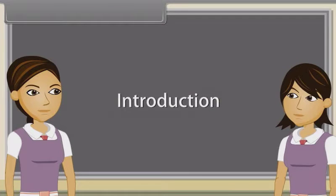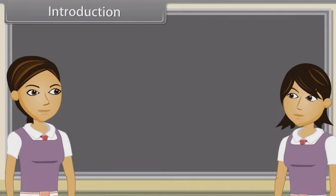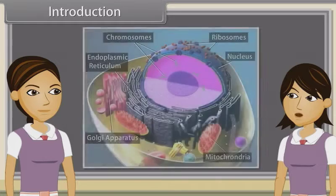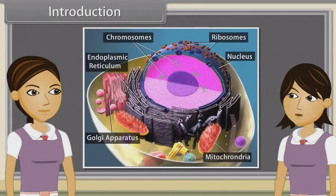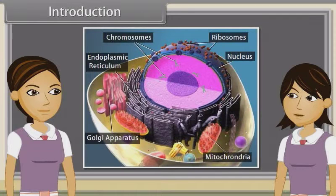Hey Ankita, we have discussed the structure of the endomembrane system, endoplasmic reticulum, Golgi apparatus, lysosomes, vacuoles, mitochondria, plastids, and ribosomes. I think we have completed all the topics.